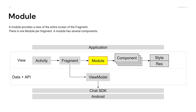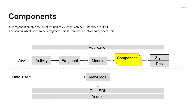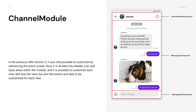A module has several components. A component creates the smallest unit of view that can be customized in UIKit. The key essence of UIKit version 3 is modularity. The screen, which used to be a fragment unit, is now divided into component units. Looking at the channel module as an example, in the previous UIKit version 2 it was only possible to customize by referencing the entire screen. Now it is divided into header, list, and input areas within the module, and it is possible to customize each view — not only the view, but also the events and data for each view.